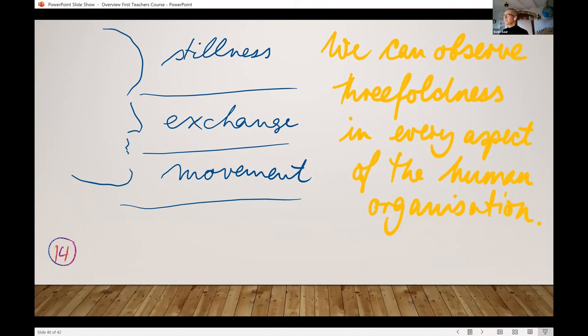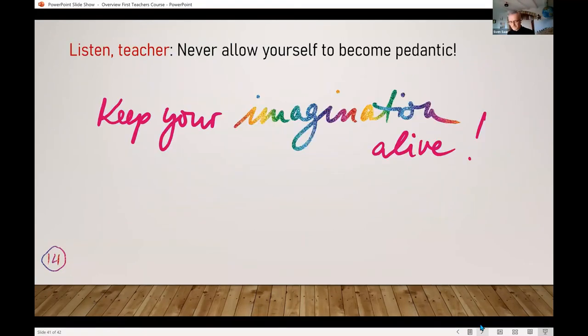Before he finishes, he makes an appeal to those teachers, to those 24 people, some of whom will become the 12 first teachers of the first Waldorf school. He says, whatever you do, whoever you are, there's one cardinal rule. Never ever allow yourself to become pedantic. Don't do something because you ought to. There is always a choice. There is always more than one way to do a thing. And if you don't cultivate your imagination, you should look for a different job. That's what he says.